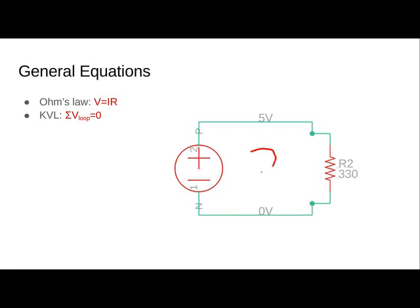Now, for our second loop, which goes over R2, we have the same thing. We go from 5 volts, we drop voltage across R2, down to 0 volts, go past the voltage source, and return to 5 volts again.